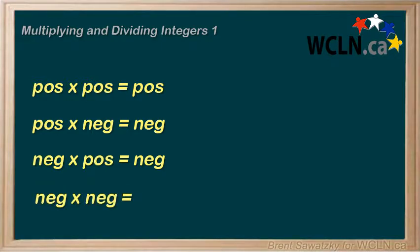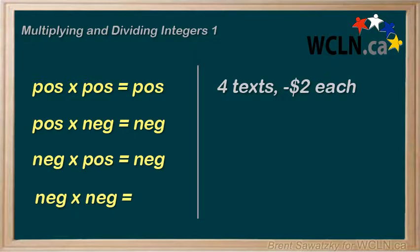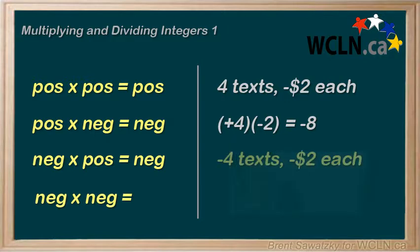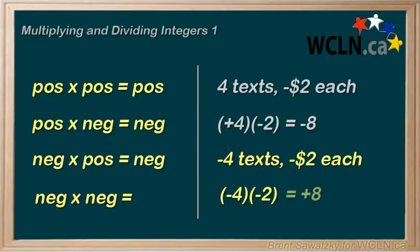This one's a bit tougher to explain. Some people visualize it this way: rather than having four texts sent — four groups of $2 lost each time, that is, four times negative two — say you contacted your mobile carrier and stated that you shouldn't have been charged for those four texts. They agree; according to your plan, those texts shouldn't have been chargeable. So they say they'll remove those four debts from your account. Removing four debts could be shown as negative four, the removal of four groups, and each debt is still negative two. If we removed four groups of $2 debt each, then we've improved our finances by $8.